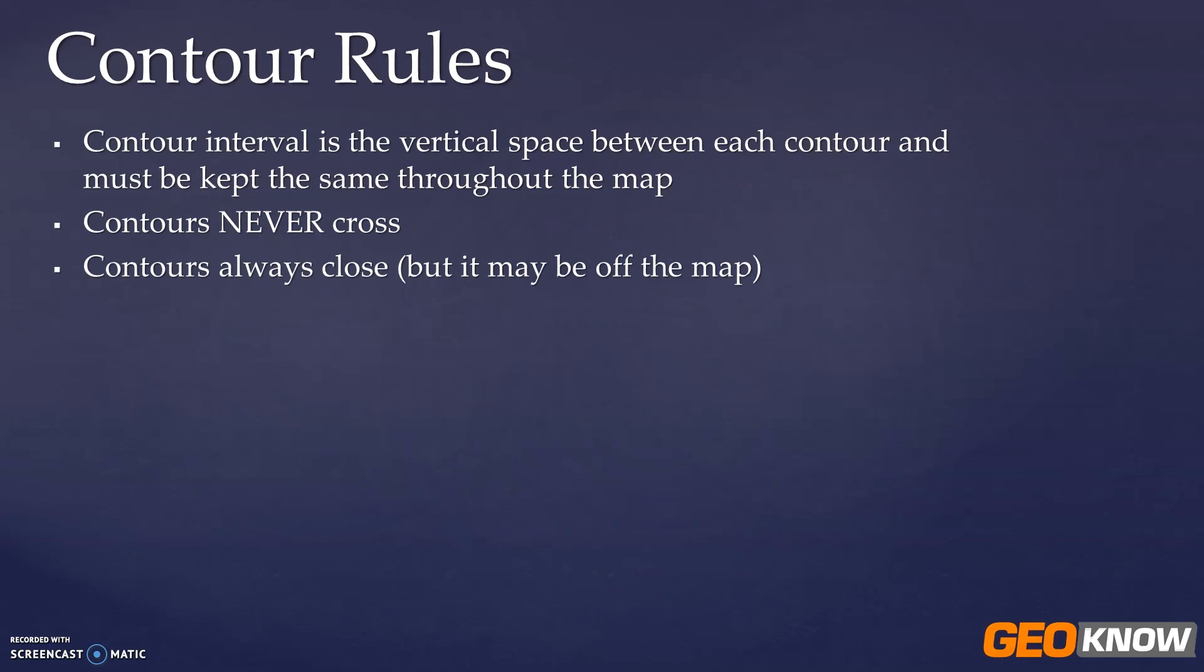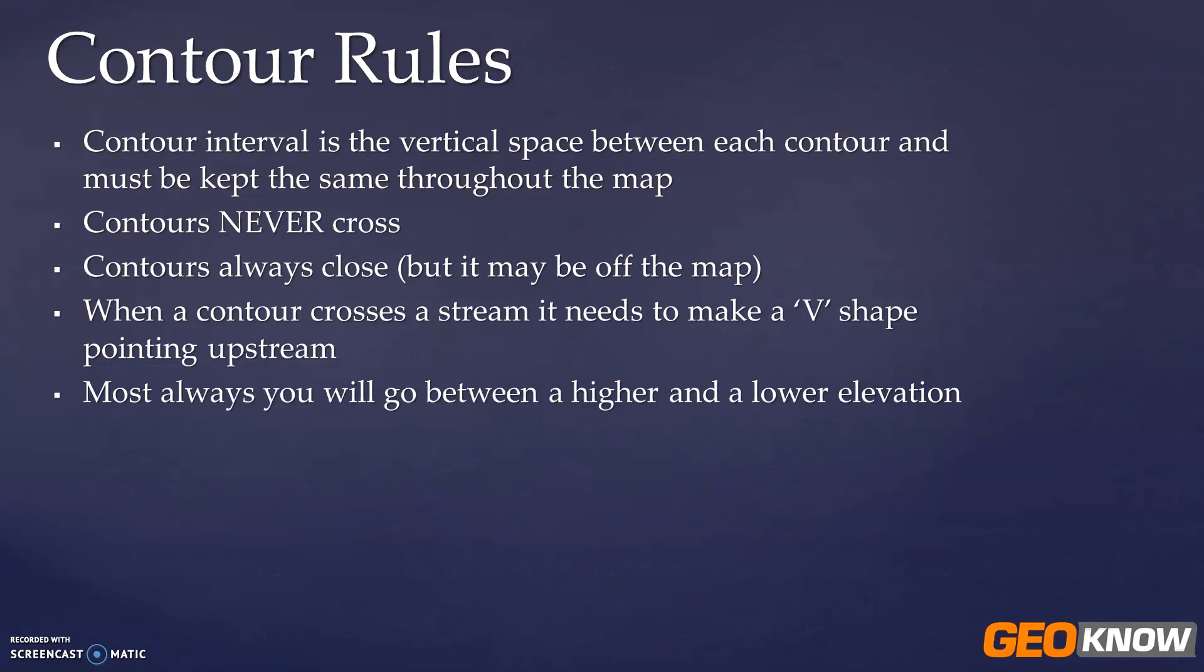Contours always close but sometimes they can close off the map so you may not see them close. When a contour crosses a stream, which we'll do in our exercise today, it makes a V-shape pointing upstream. Most always you're going to go between a higher and a lower elevation. There's one exception to that that I'll show you in the exercise today.